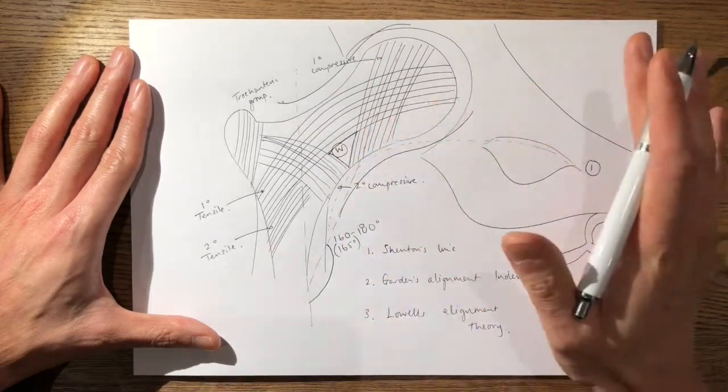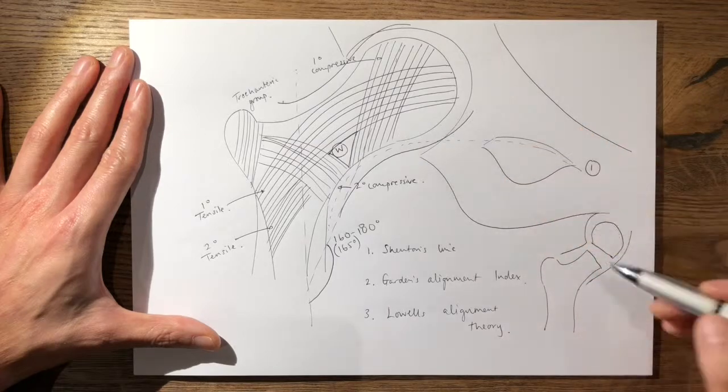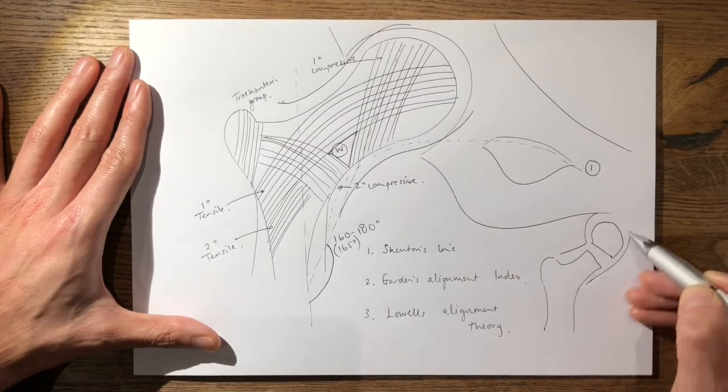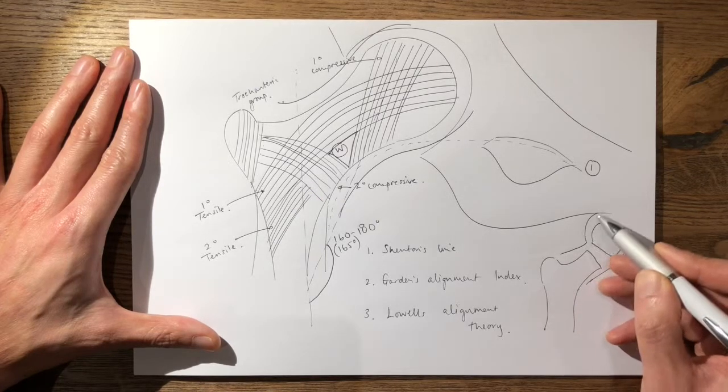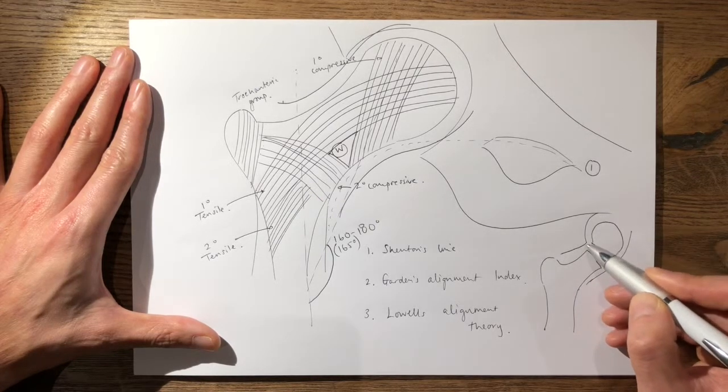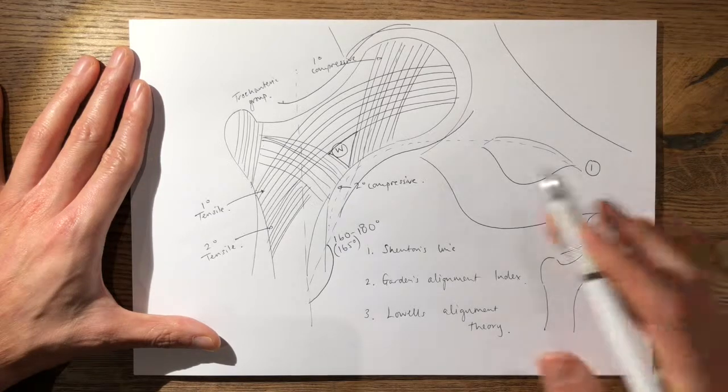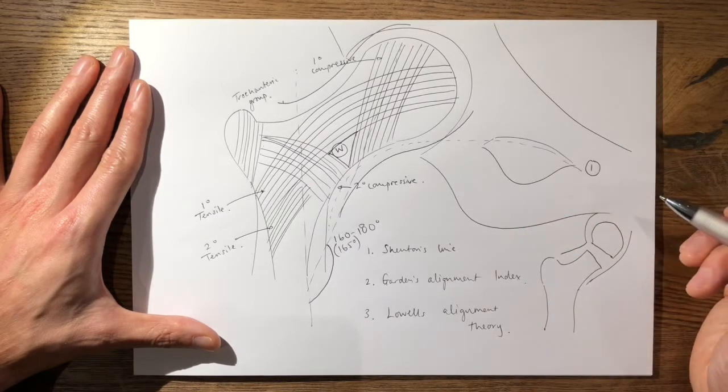So Lowell's alignment theory states that you should have a smooth S or reverse S shape on both sides of the femoral neck in all views, whereas if it's malreduced, you'd either get a C shape such as this and on the other side, you'd have an acute bend in your S. This is only in the AP view, but it's similar in the lateral view as well.